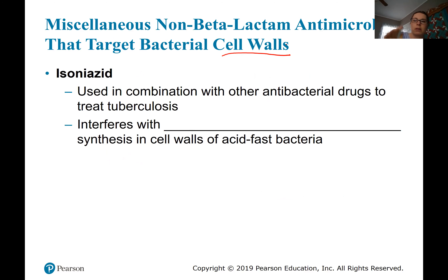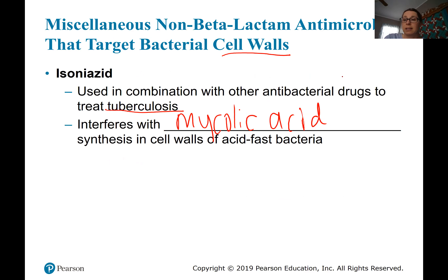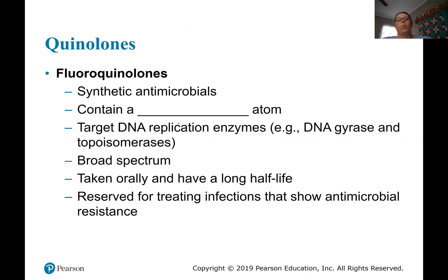The last cell wall drug is isoniazid, used to treat tuberculosis. It interferes with mycolic acid synthesis — that waxy layer that Mycobacterium tuberculosis has in acid-fast bacteria. Tuberculosis is very resistant, and treatment usually requires many different types of antimicrobials taken in combination for months at a time once diagnosed.